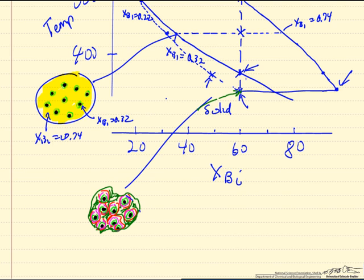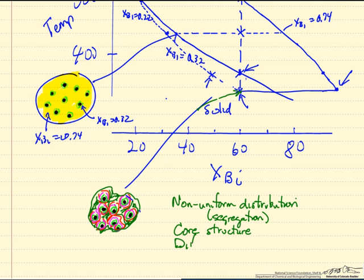These different regions have different melting points, which means when we start raising the temperature, we're going to melt the regions between the particles first and have a solid and liquid region. We're not going to melt it uniformly. Some important aspects: we have a non-uniform distribution, which is referred to as segregation.